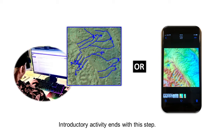Students use their topographic maps to interpret the flow patterns of the regions using the rule of Vs. They then discuss why the flow paths look the way they do and what special hazards and considerations they might expect in that hydrogeological situation and, by extrapolation, the hazards and vulnerabilities that may be associated with Karst regions. The introductory activity concludes here, and results can be presented in writing, orally, or in any way that works for the instructor and students.